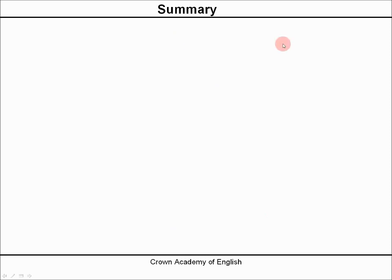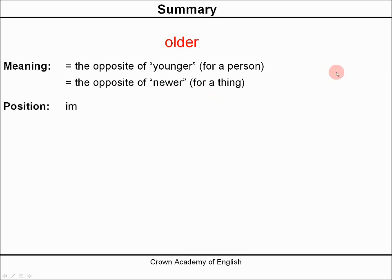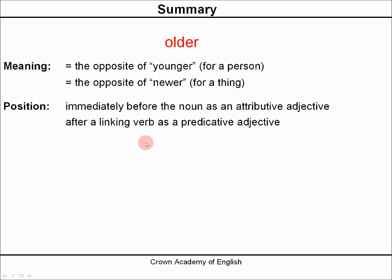So a quick summary. Older means the opposite of younger when we use it to describe a person, and it means the opposite of newer when we describe a thing. The position can be immediately before the noun as an attributive adjective, or after a linking verb as a predicative adjective — both are possible.